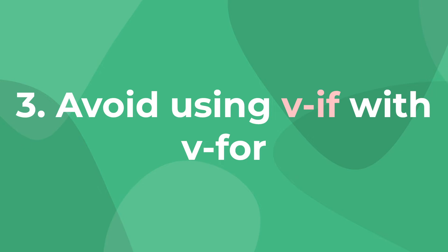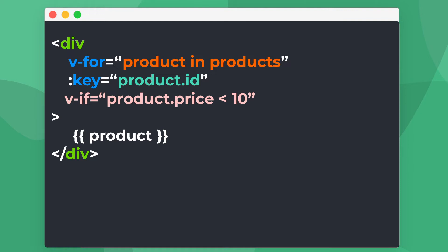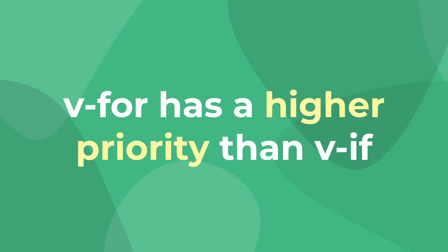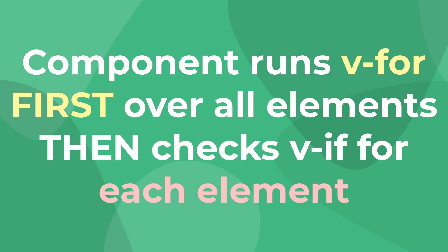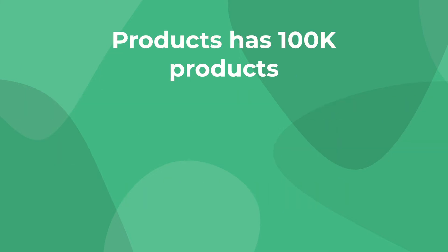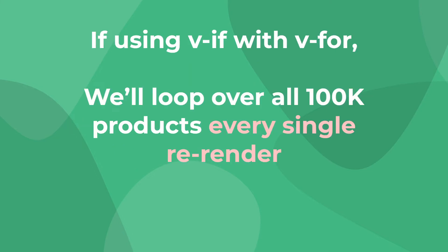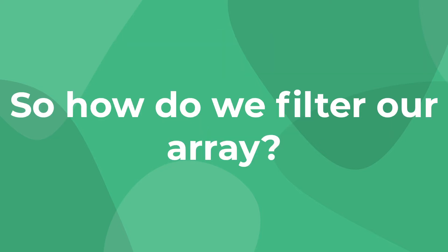Third, avoid using v-if inside of your v-for loops. A common mistake is using v-if to try to filter data in your Vue for loop. Although this seems intuitive, it causes a huge performance issue because Vue prioritizes v-for over the v-if directive. This means our component will loop over every element and then check the v-if conditional, which is super inefficient. For example, if we are looping over a huge array with tens of thousands of items but our v-if filters all but three products, every time we re-render Vue will have to loop over thousands of items regardless of whether those three specific products changed.